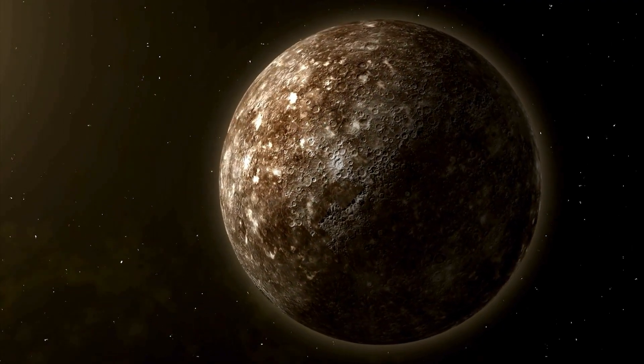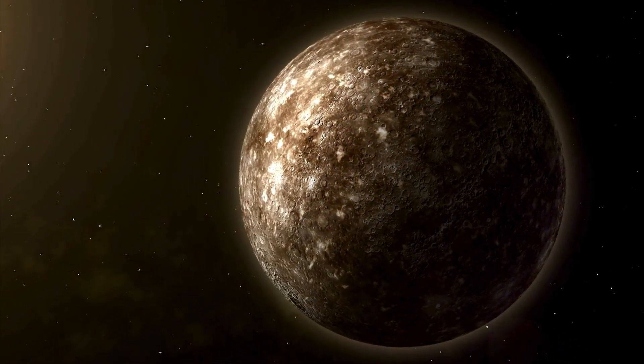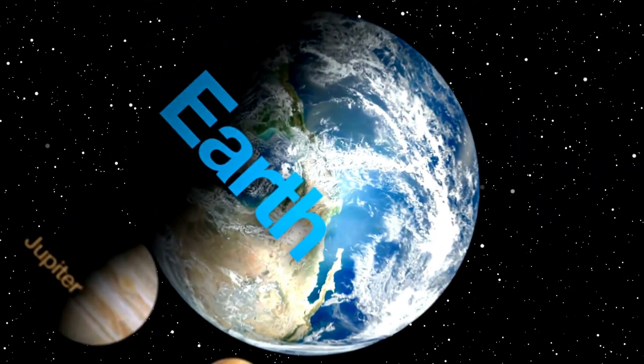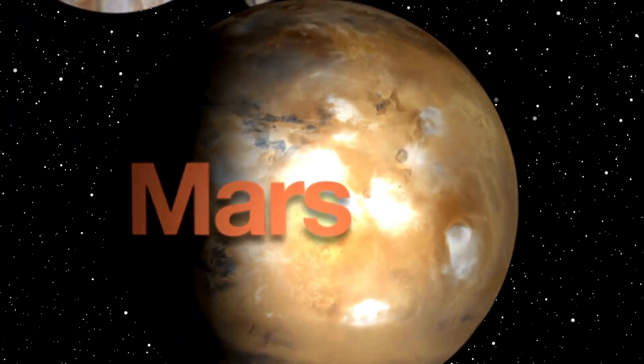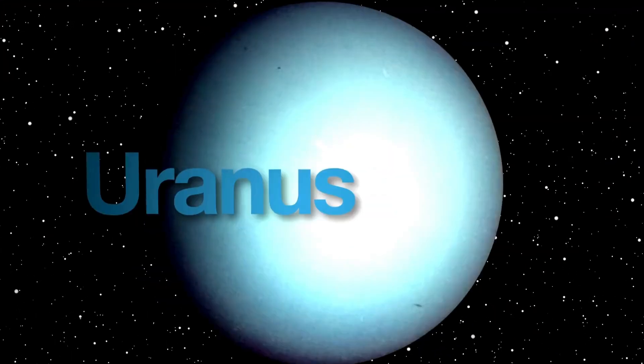One of the most fascinating aspects of Pluto's orbit is its convergence point with Neptune's orbit. For about 20 years during each orbit, Pluto actually comes closer to the sun than Neptune, challenging our expectations about their positions in the planetary system.